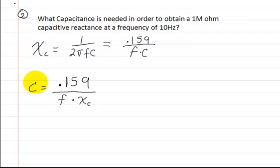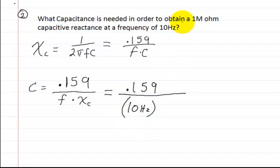So now at this point here where the capacitance is equal to 0.159 divided by the frequency multiplied by the capacitive reactance. So now at this point you just need to plug in the values and we can just solve it. So 0.159 divided by the frequency. And what was the frequency? At a frequency of 10 hertz. So we've got 10 hertz here. And then we wanted to obtain a 1 megaohm capacitive reactance. So 1 megaohm.